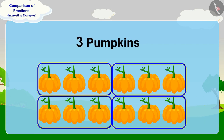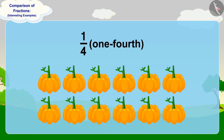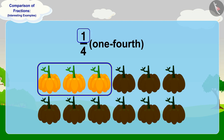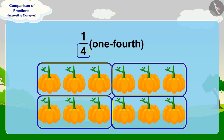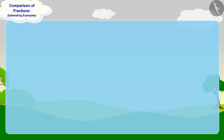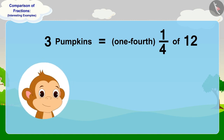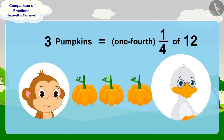Exactly three pumpkins. To get one-fourth part, we take one part out of these four equal parts. In this way, three pumpkins are one-fourth part of twelve pumpkins. Babban will give three pumpkins to uncle.